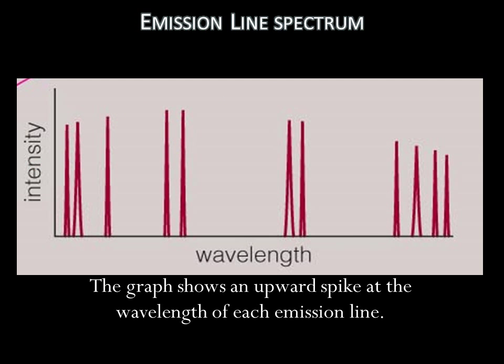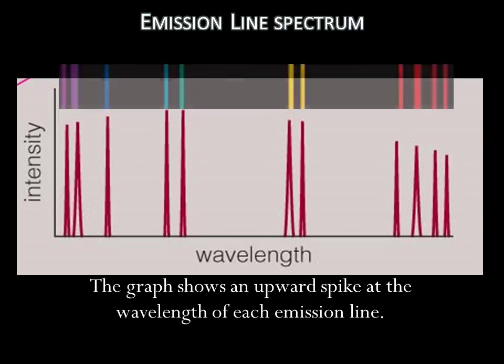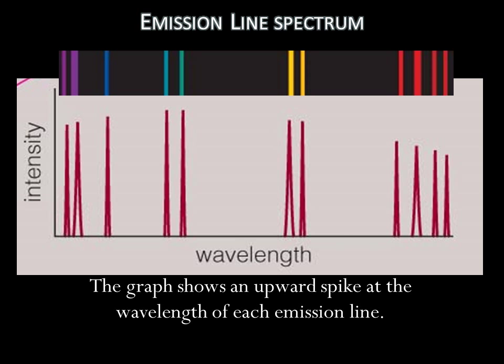When we look at the emission line spectrum as a graph of intensity versus wavelength, the emission lines appear as spikes. They are essentially the only light making it into the prism.